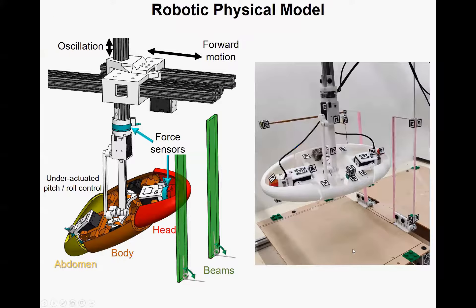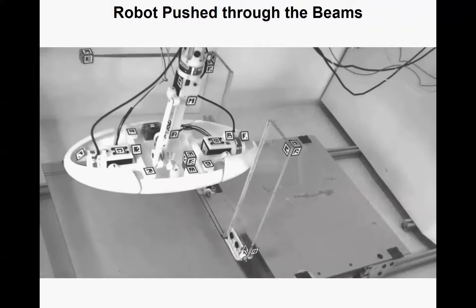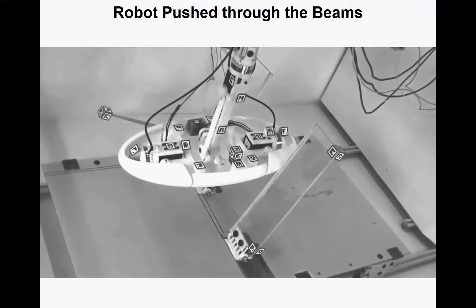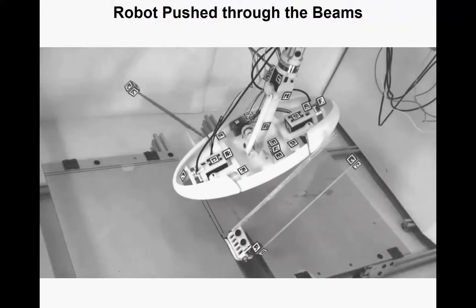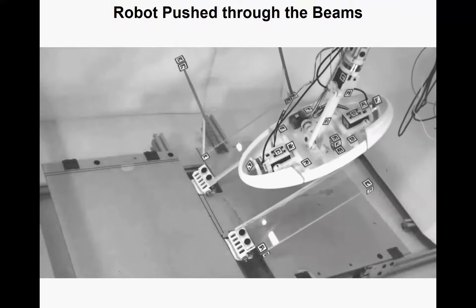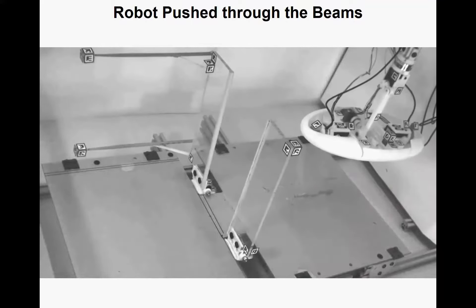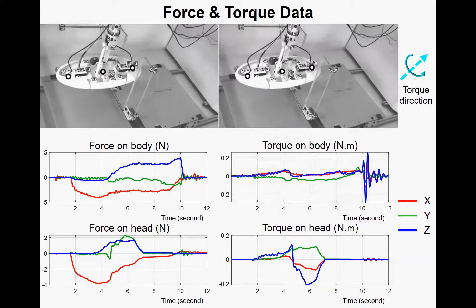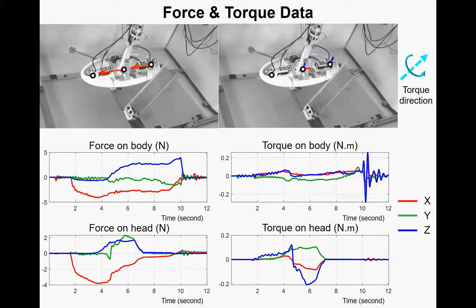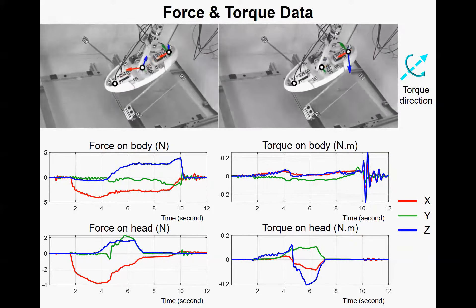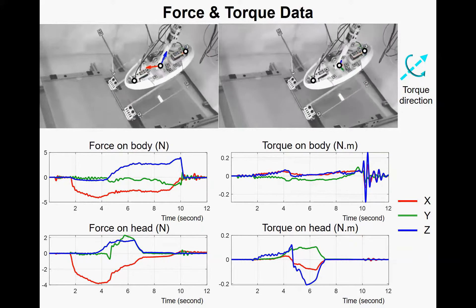Here is the CAD and real model of our robot. We let the robot run into the beams and use the CAD to track the robot's and beam's kinematics. This is the trial we have just got. We haven't added any head flexion or underactuated pitch and roll control. Meanwhile, we collected force and torque data from the body part and head part. Here are the preliminary force and torque measurements.